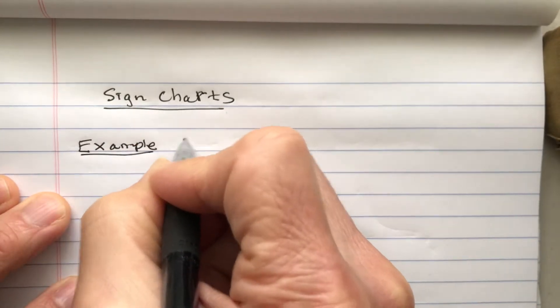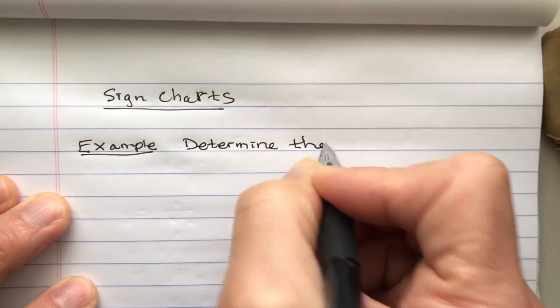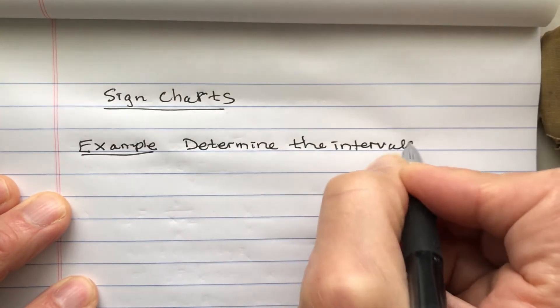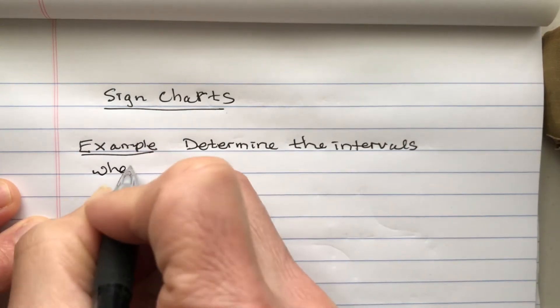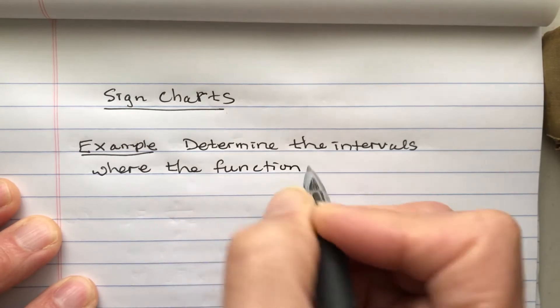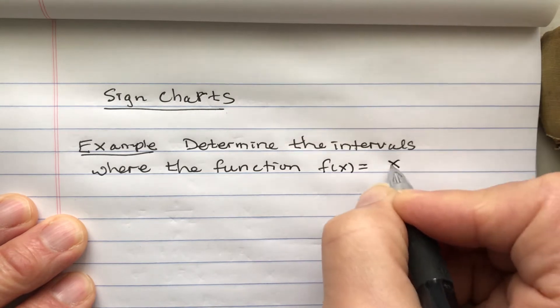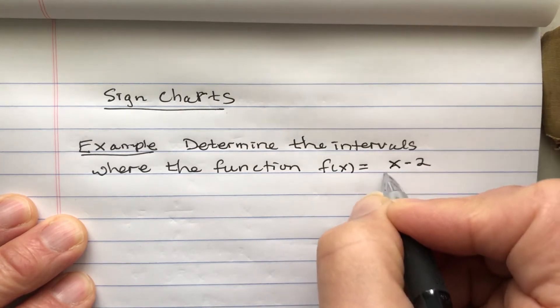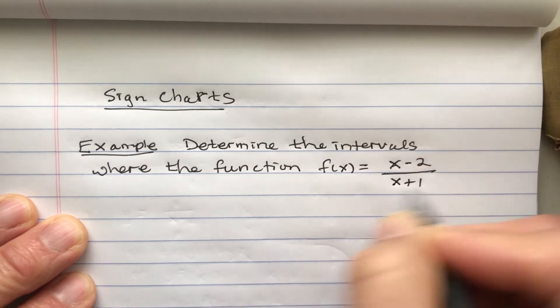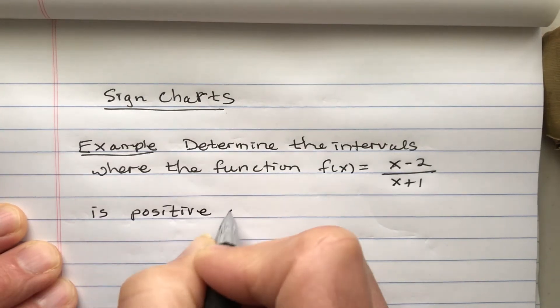Let's do this example. Determine the intervals where the function f(x) equals x minus 2 over x plus 1 is positive or negative.